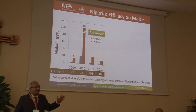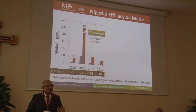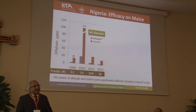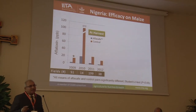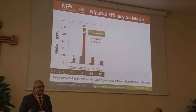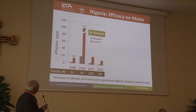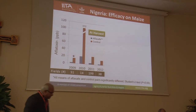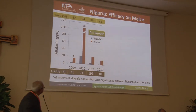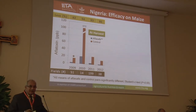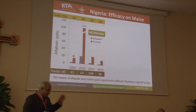All our testing is done in farmers' fields — we do not do any trials in research stations or in the lab. In Nigeria over four years, across a number of treated and control fields, the reduction in aflatoxin contamination ranges between 82% and 94% at harvest time. This is consistent — I'm showing about four years of data, but there are actually six years of data available.